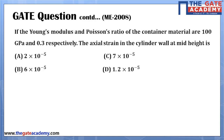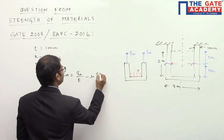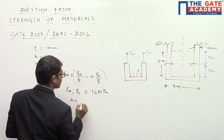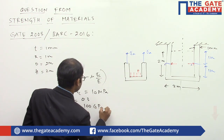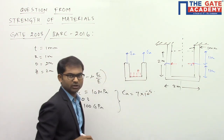Now the next part of the question: if the Young's modulus and Poisson's ratio of the container material are 100 GPa and 0.3 respectively, find the axial strain in the cylinder wall at mid-height. The formula for axial strain is: εa = σa/E − μ × (σc/E). Both σa and σc equal 10 MPa, μ = 0.3, and E = 100 GPa.